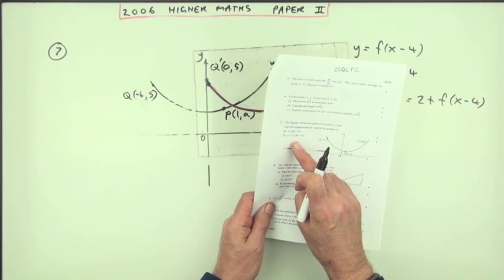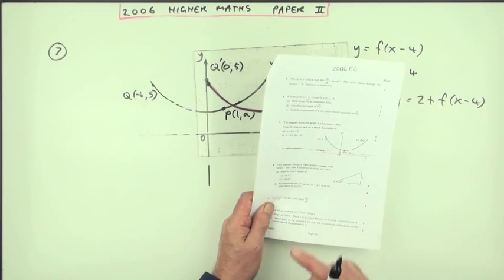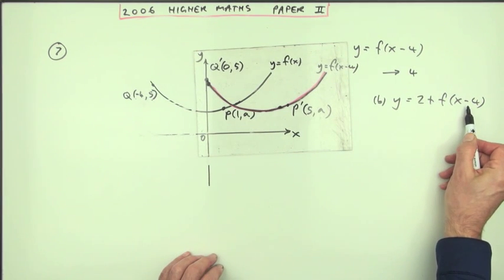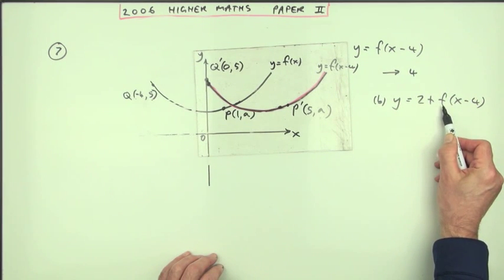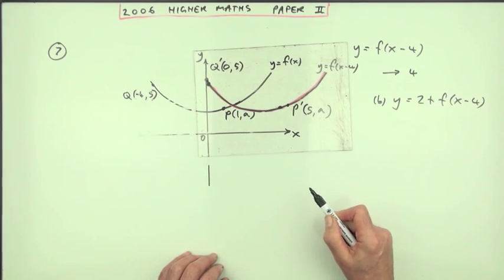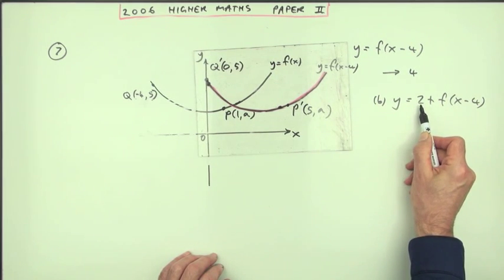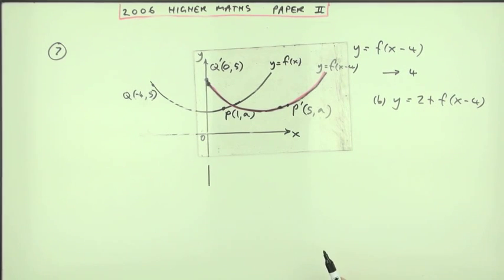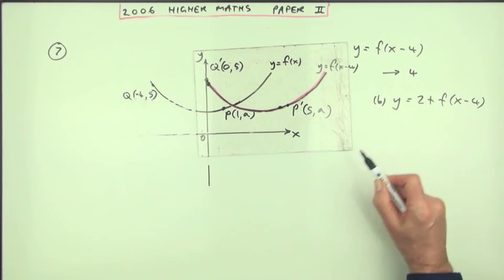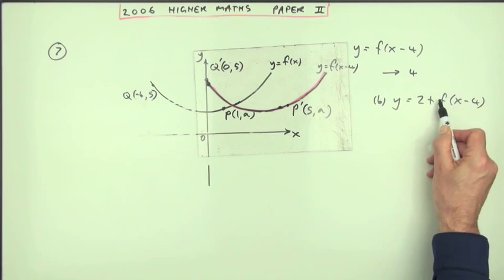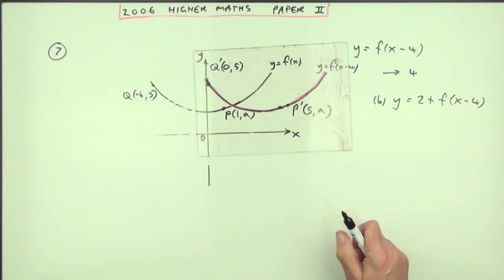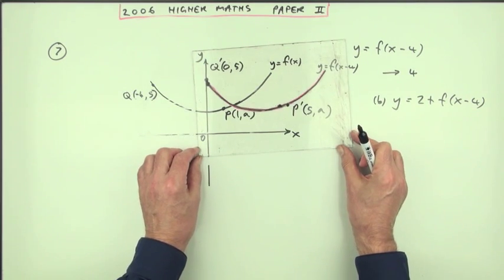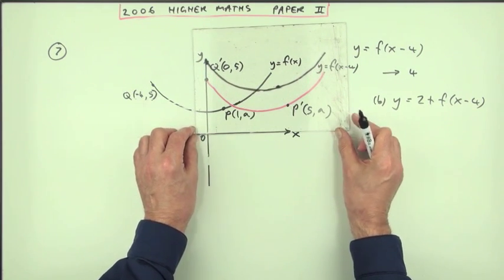Now part b says draw the graph of y equals 2 plus f of x minus 4. Well I've already done f of x minus 4. I've taken the answers which I found four back and brought them forward. The two outside simply means whatever answers I've got now, I'm going to add two onto them. The answers are going to increase by two. I take my answer, f stands for that, and I add two onto it. So it's been shifted forward four, so now I've got to shift the whole thing up two. So the new graph just lifts up to here.